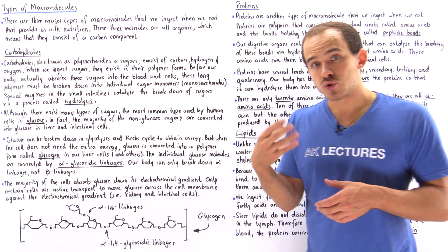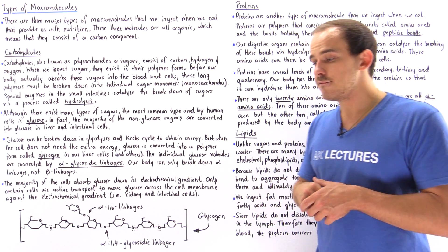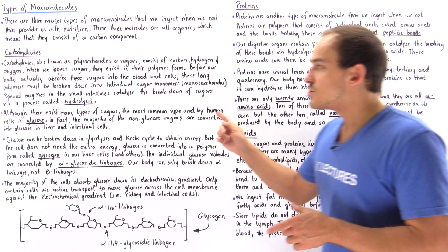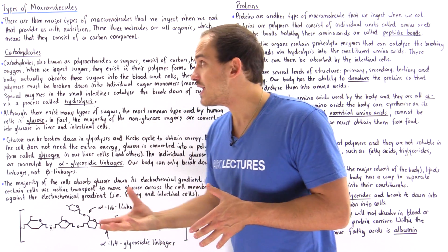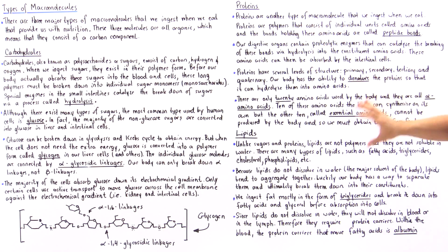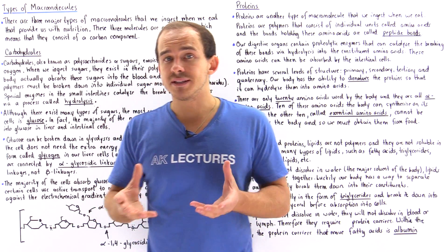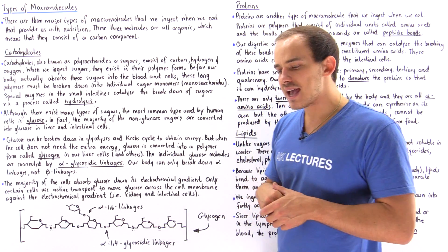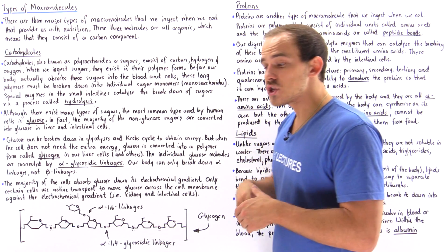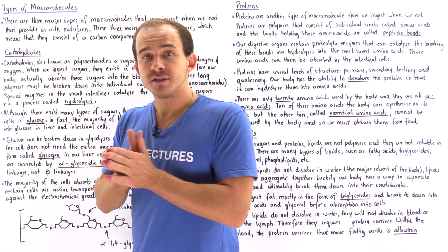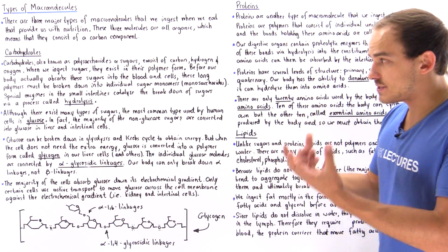The process that these enzymes use is known as hydrolysis, which means they use water to cleave the bonds that connect the individual sugar monomers. Hydrolysis is used not only in carbohydrate breakdown, but also in the breakdown of proteins and lipids. In fact, hydrolysis is the most common type of catabolic process in the body. Catabolic simply means the breakdown of, as opposed to anabolic, which means the synthesis of.